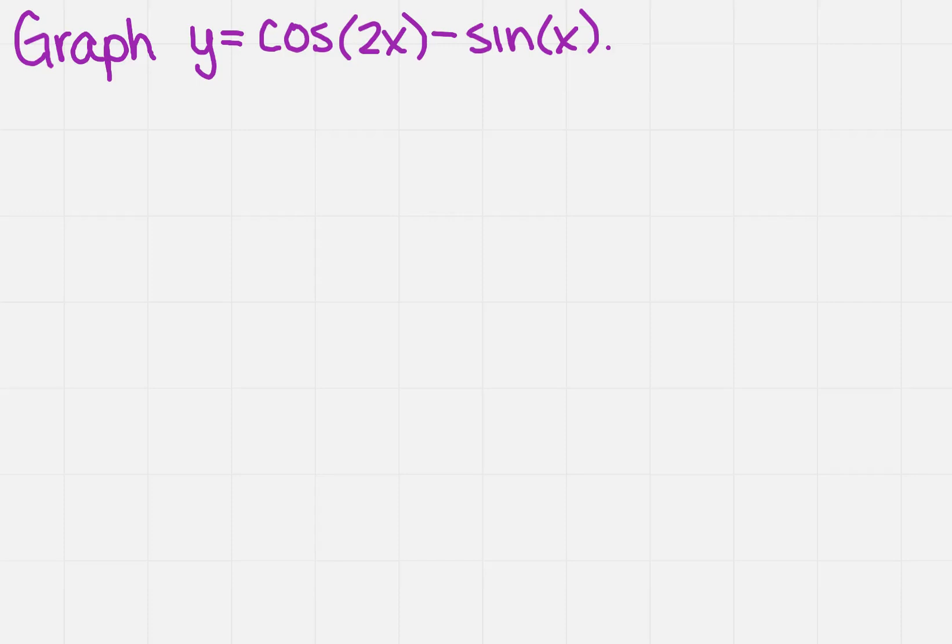We want to graph y equals the cosine of 2x minus sine x. Remember, we can think about this as y equals the cosine of 2x, and then we can also think about it as y equals minus sine of x.